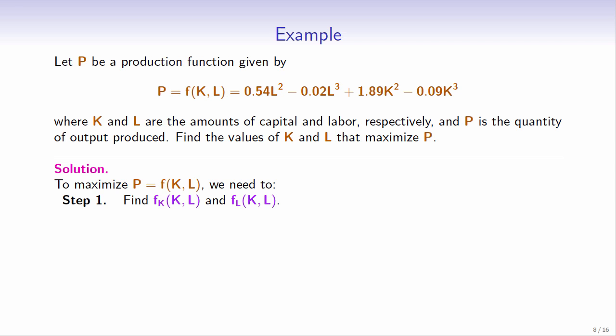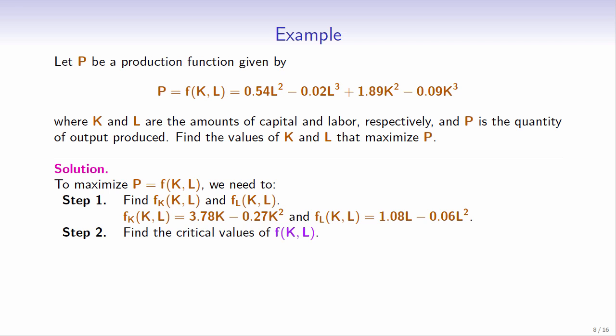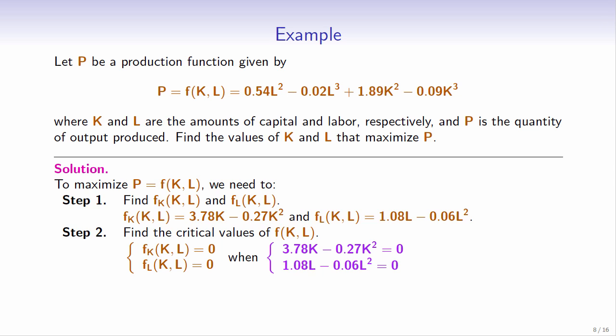Step 1: Find the first order partial derivatives of f with respect to each variable. The partial derivative of f with respect to k is 3.78k minus 0.27k squared. The partial derivative of f with respect to l is 1.08l minus 0.06l squared. Step 2: Find the critical values of f. The first order partial derivatives equal 0 when 3.78k minus 0.27k squared equals 0, and when 1.08l minus 0.06l squared equals 0.